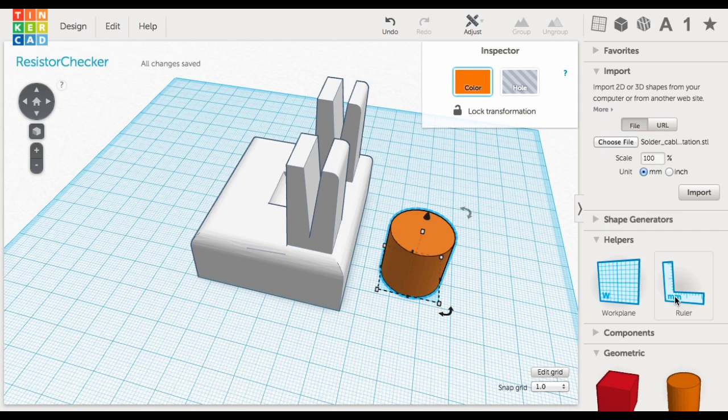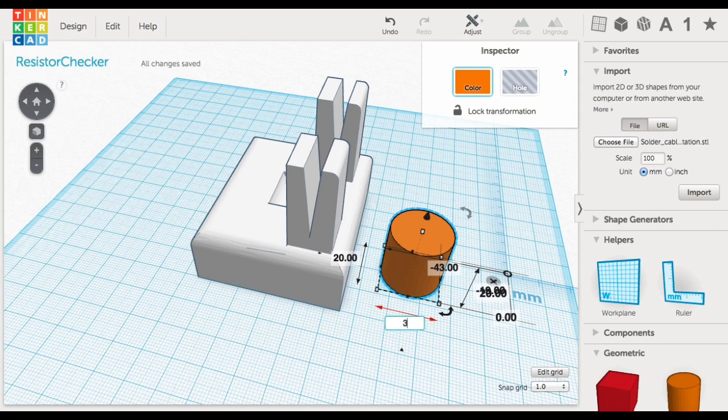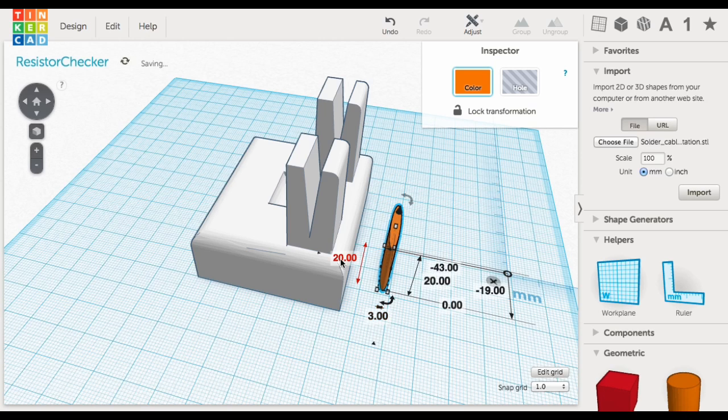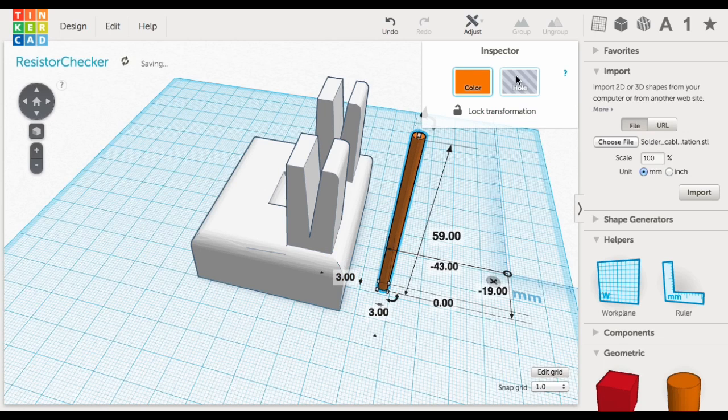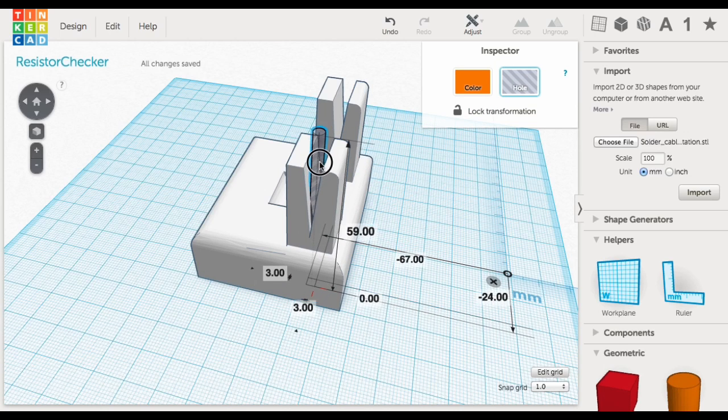So now I just needed to make the holes for the wires where the resistor is actually going to touch. So I brought in a cylinder, made it three millimeters by three millimeters so it's slightly bigger than the copper wire that's going to go in here. Stretched it out, made it into a hole, and then here I manually centered it to the V, right in the center of the V.